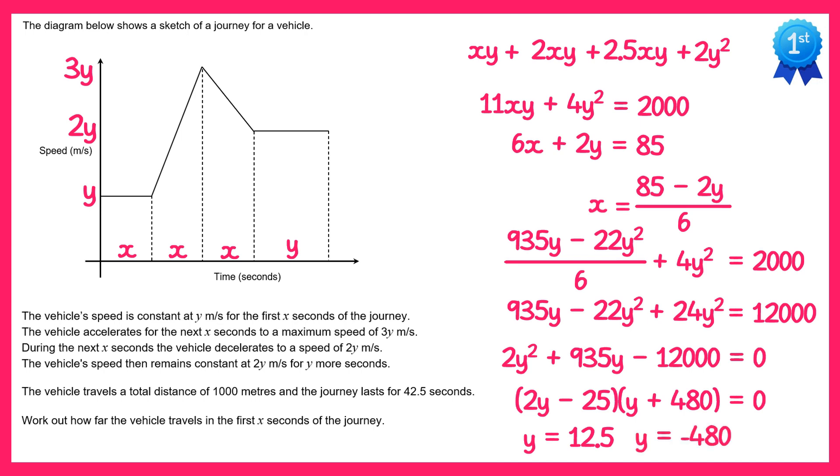Now we can't have negative 480 since it's a speed, so we'll remove that solution. And we can also work out the value of x by going back to our x formula and substituting in y for 12.5.